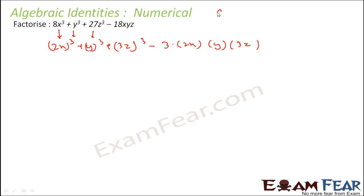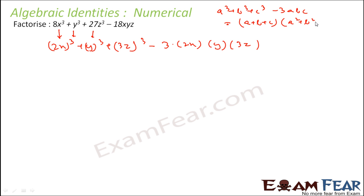We know that a³ + b³ + c³ − 3abc is nothing but (a + b + c) × (a² + b² + c² − ab − bc − ca). This is something we know, so let's try to apply this identity here.